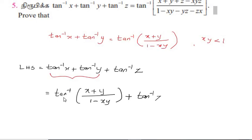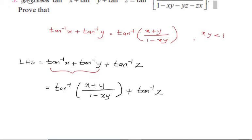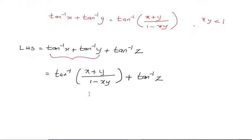First, tan inverse of x and tan inverse of y are added using the formula. We can use tan inverse of x plus y by 1 minus xy. Once again I have to apply the formula. Then we get tan inverse of x plus y.